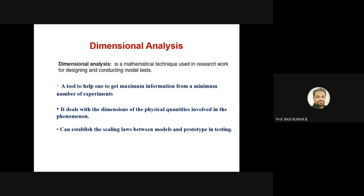We can define the length ratio: the length of the model divided by the length of the actual prototype will have a certain value. So we can say the length of model is a certain number of times the length of prototype. Similarly, the velocity of the model will be a certain number of times the velocity of the prototype — velocity, acceleration, and length with respect to the prototype. So basically this method will be helpful for us, and for this purpose we use dimensional analysis.